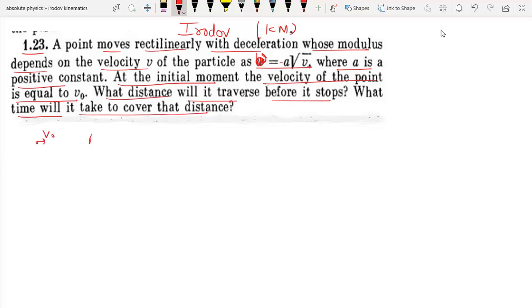And it is a deceleration field, so I am going to write minus A into the root V, which is a retardation and it has been stopped. So I am going to remove how much distance it will take and how much time it will take. So I am going to do it in that process.